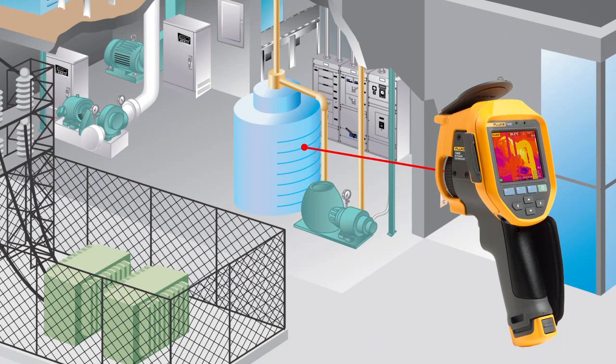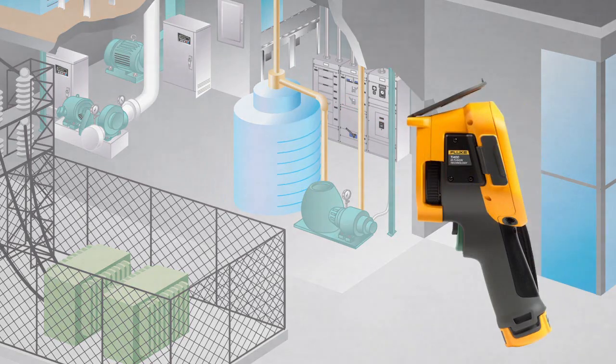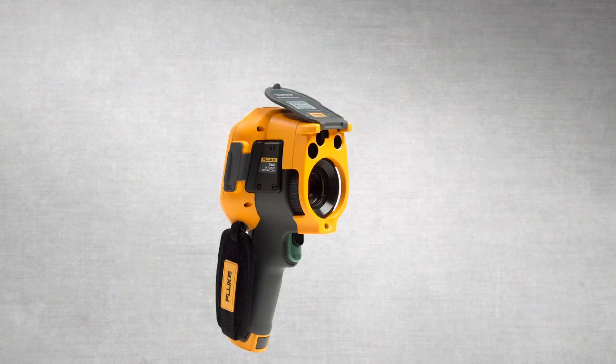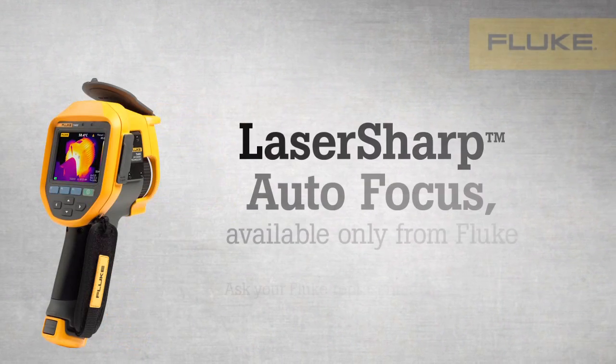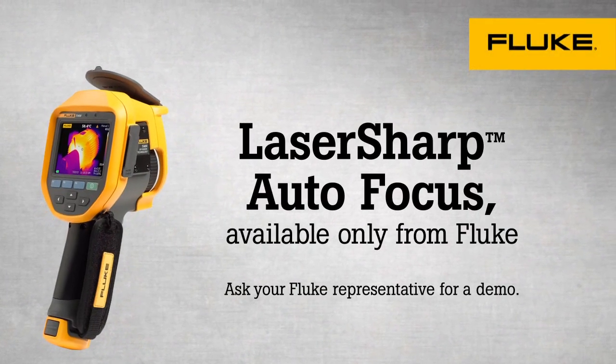You place the red laser dot on the object you are inspecting, then you pull the trigger for an in-focus infrared image every single time. LaserSharp autofocus gives you the confidence that you'll never take an out-of-focus infrared image again. Ask your local Fluke representative for a demo.